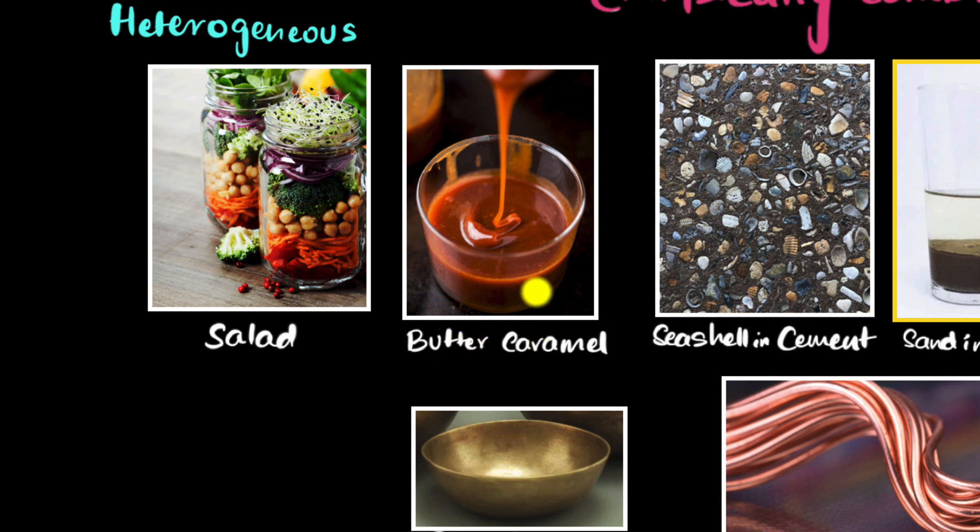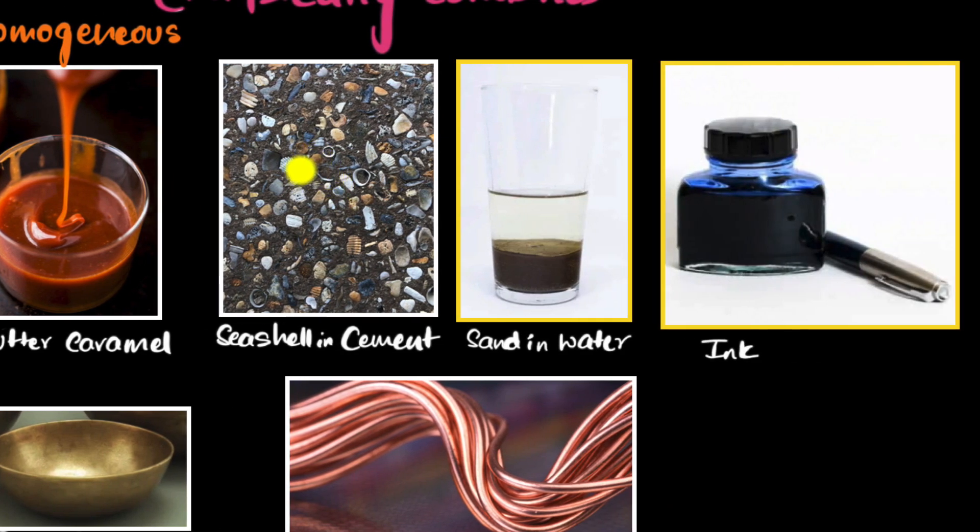Okay, what about butter caramel? Well, can we see distinctly where the butter is and where the caramel is? No, they're nicely uniformly distributed. So this is a homogeneous mixture. We can clearly see the seashells and the cement separately. So it is heterogeneous mixture. This is sand and water. We can see the sand here and water over here. I can clearly see the boundary. So it's again heterogeneous mixture.